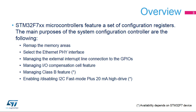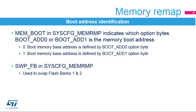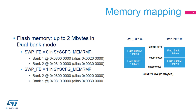Please refer to the respective reference manuals. The SWP-FB bit in the System Configuration Remap Register allows swapping of Flash Memory Banks 1 and 2, which allows booting either to Bank 1 or Bank 2. The MemBoot bit in the same register allows software to identify the boot address, and in conjunction with BootAddX option bytes, it allows identification of the boot schema and the running firmware.